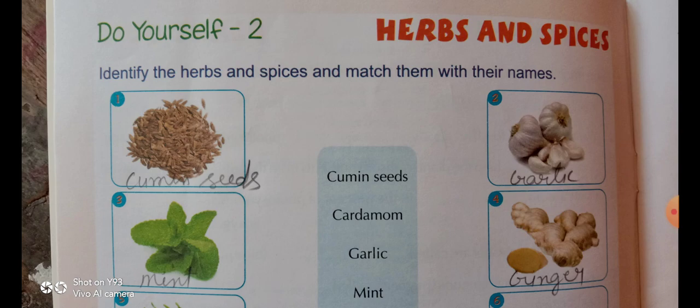Now I am going to tell you Do Yourself Two. I have already explained the chapter 'Benefits of Spices.' This activity is related to herbs and spices — identify the herbs and spices and match them with their names. You will write the answer below the picture. As you can see in this video, I have already written all answers below the pictures. The first answer is cumin seeds — C-U-M-I-N S-E-E-D-S.